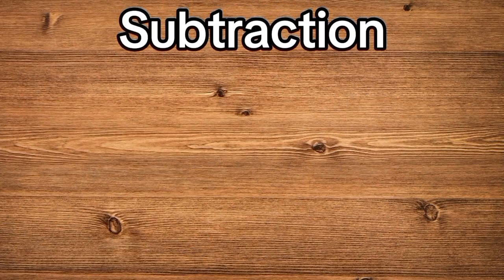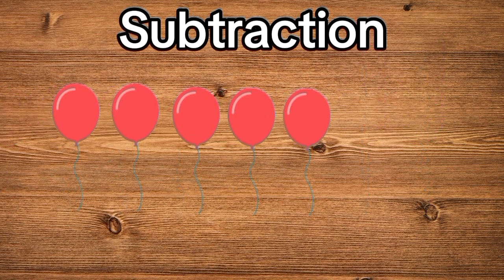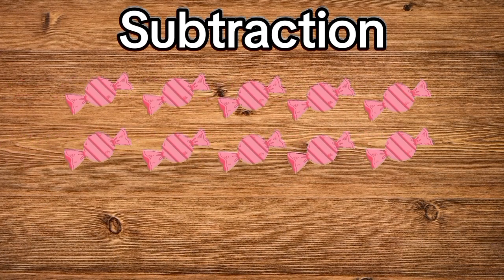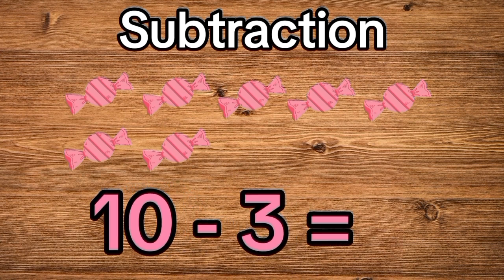How about subtraction? Subtraction is when we take something away. Imagine we have seven balloons and two float away. That's seven minus two: one, two, three, four, five. We have five balloons left. Now, what if we have ten candies and we eat three? That's ten minus three. Let's count what's left: one, two, three, four, five, six, seven. We have seven candies left.